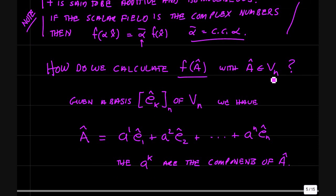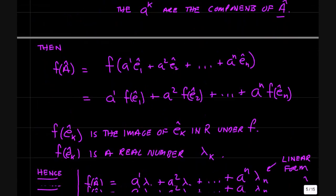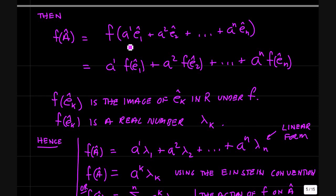How do we calculate f of a when a is a vector? If you're given a basis in vn, you can write a as a linear combination of the basis vectors, where a sub k are the components of a in the e basis. So f of a — using the fact that the a sub k's are scalars you can factor out — really you just end up with the action of the linear functional on the basis vectors. If you know the value of f on the basis vectors of vn, you know the functional f for all vectors a in vn. f of the basis vector e sub k is a real number, call it lambda k.